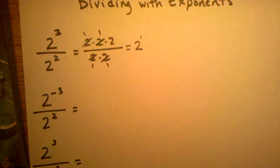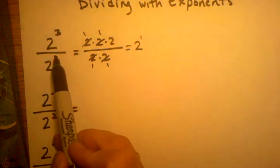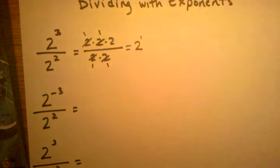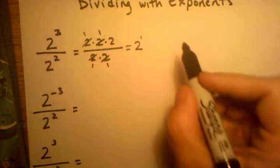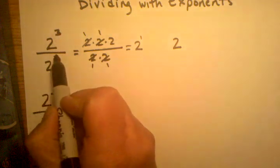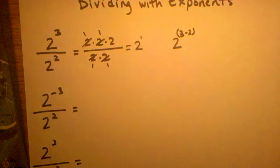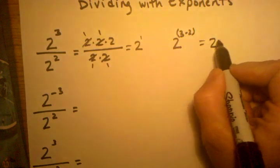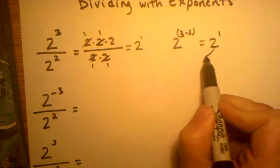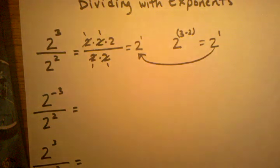Now if we do it using the trick or the short way, we can simply take these two exponents and subtract them, and that will tell me how many twos we're actually going to multiply. So this would be 2 to the 3 minus 2 power. When we solve that, we get 2 to the first power, which is the same answer. So that was the easiest example. Let's go on to ones where we have some negative exponents.